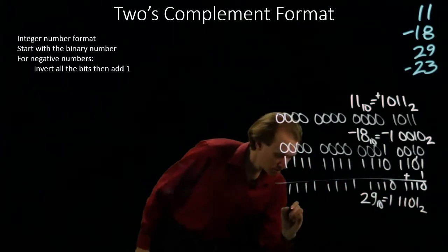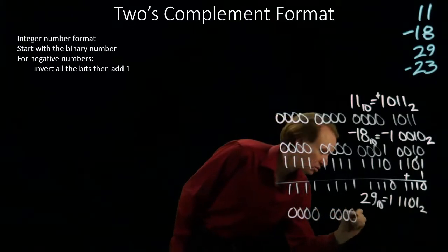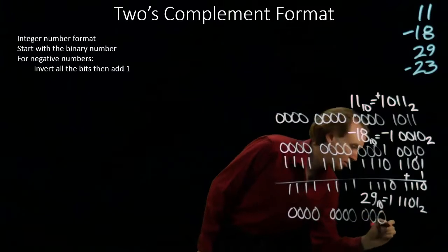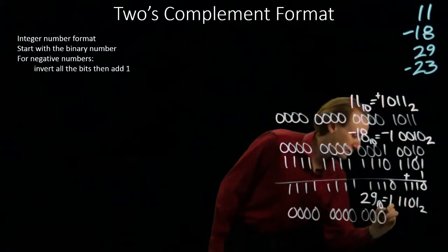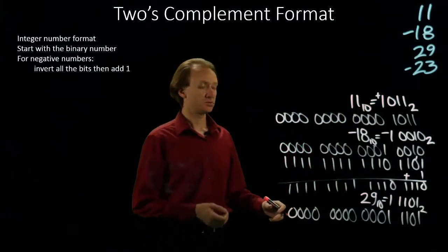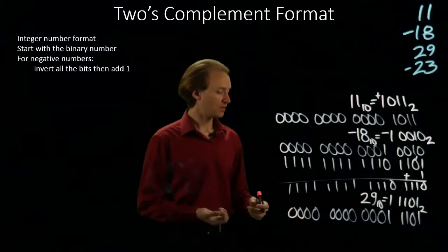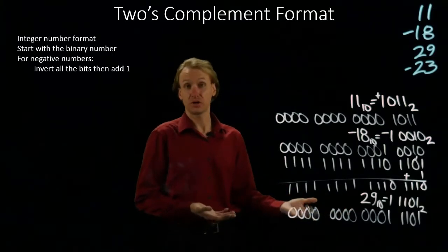and adding my magnitude. Now since 29 is a positive number, I'm done. That's 29 in two's complement.